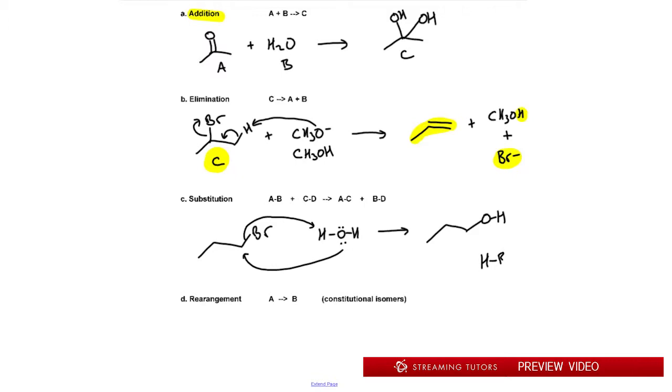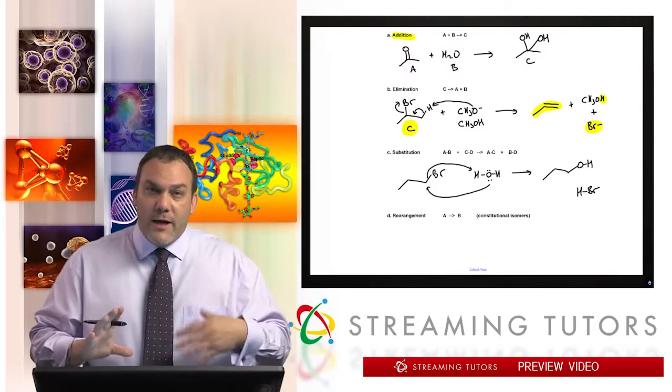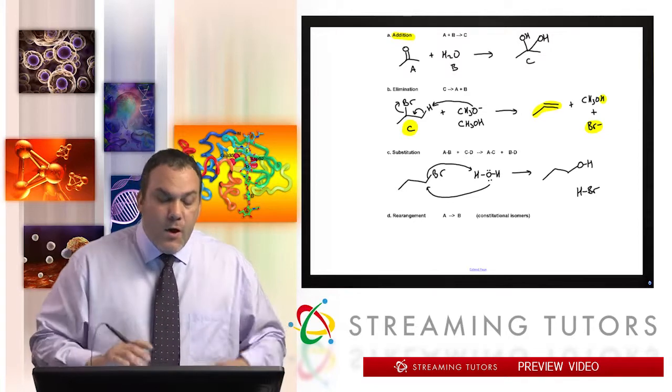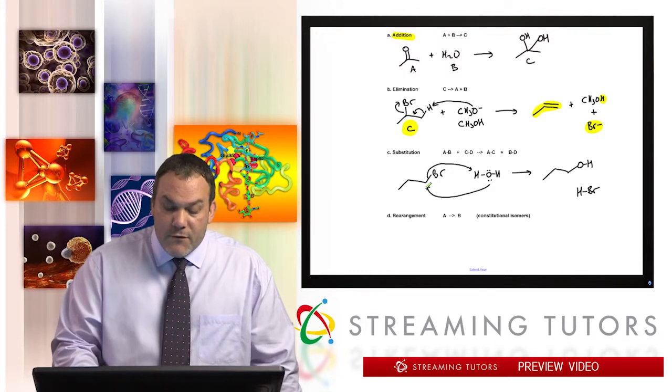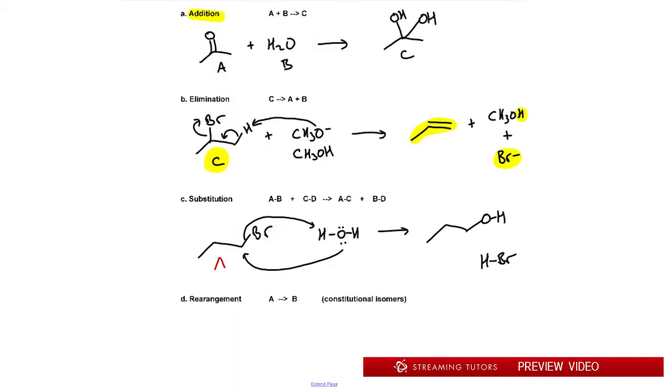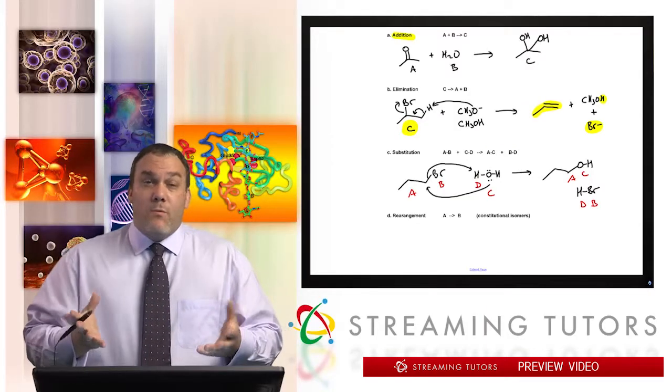We make HBr and we make the OH from water attaching onto the carbon. This is known as a substitution because we swapped out pieces. If this is A and B for the first molecule, and this is C oxygen and D, then now we have a connection between A and C and between D and B. We swap pieces. That's a substitution.